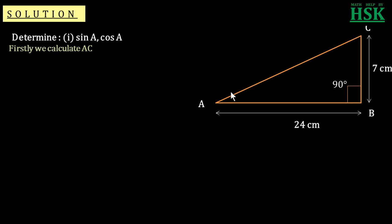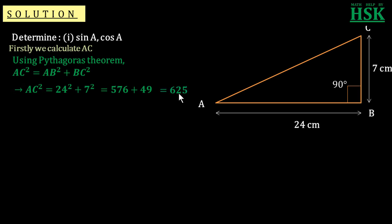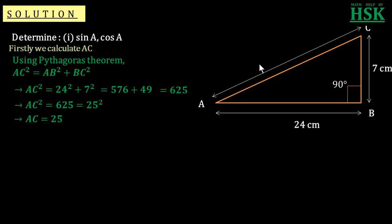To calculate side AC, we apply the Pythagoras theorem. According to Pythagoras theorem, AC square is equal to AB square plus BC square. AB is equal to 24 centimeters, so 24 squared; BC is equal to 7 centimeters, so 7 squared. 24 squared is 576, 7 squared is 49, and totaling gives 625. So AC squared equals 625, which is 25 squared, therefore AC equals 25 centimeters.